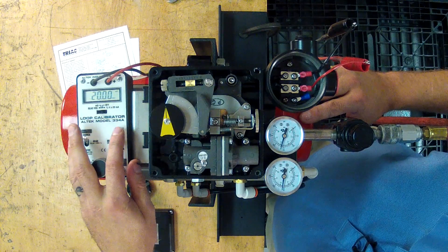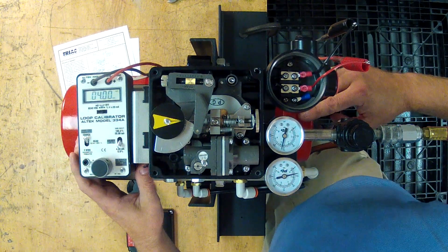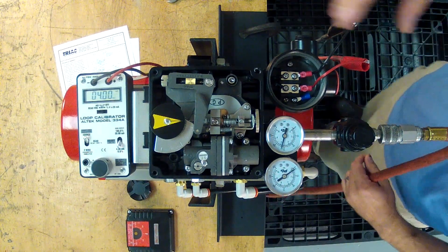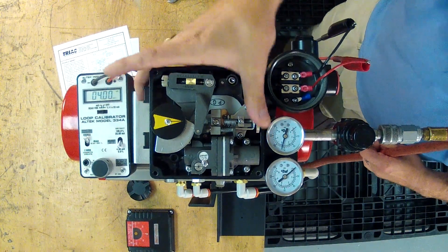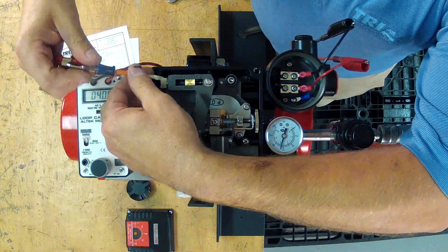Okay, we're going to go back down to 4 milliamps. Now, I'm going to throw this positioner all out of whack by just turning the screws and basically uncalibrating the actuator.